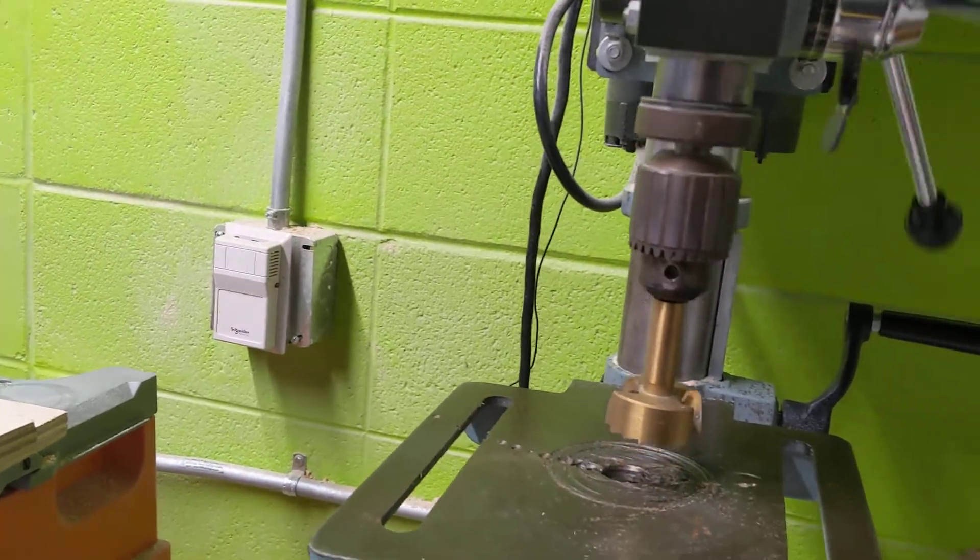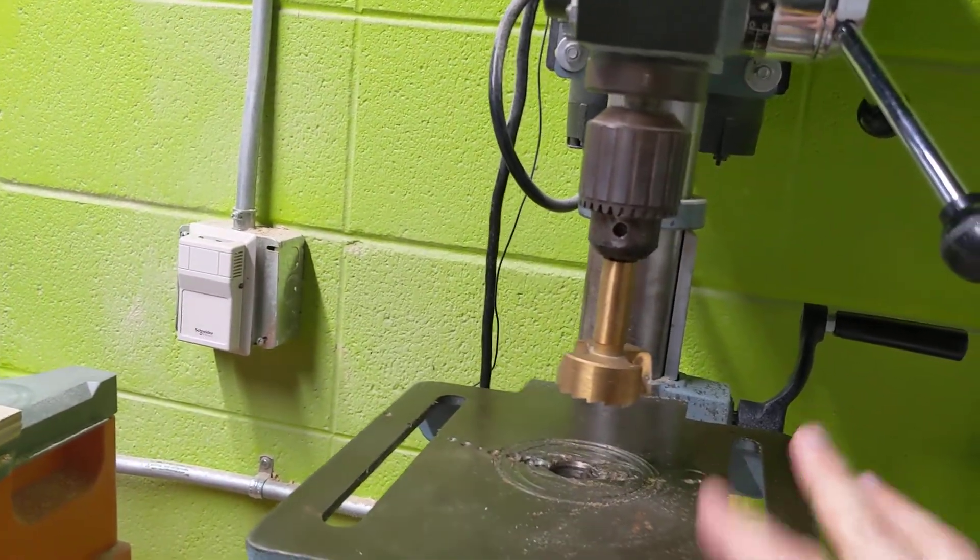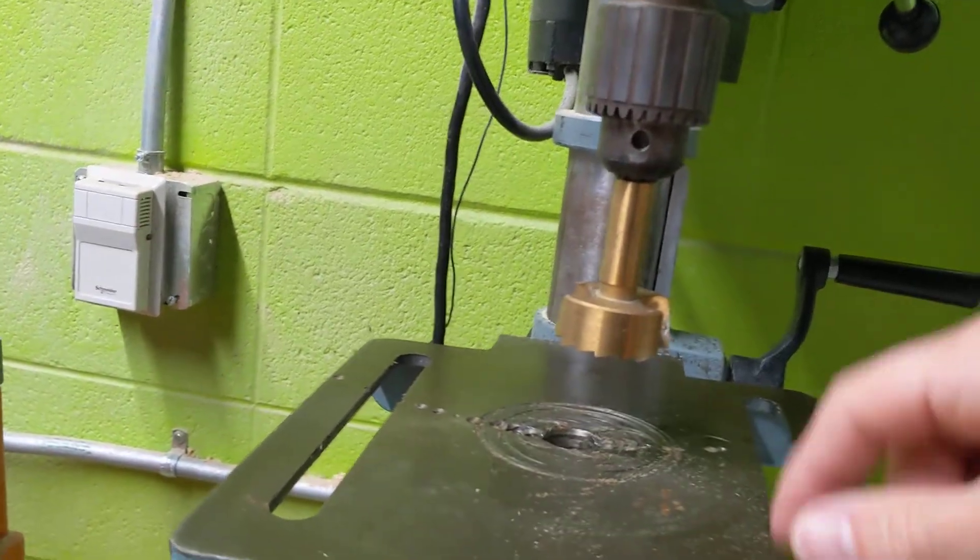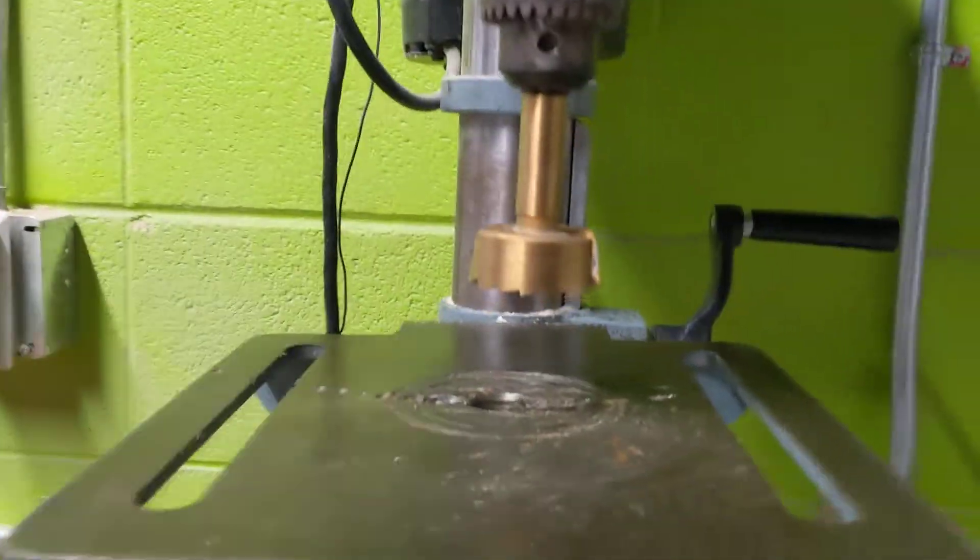That's one reason why we always want to put a piece of wood under what we're drilling, because we don't want our drill bits to be hitting this table. That's going to ruin the drill bits.